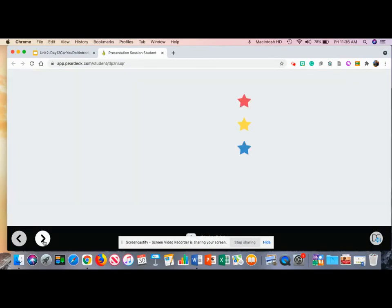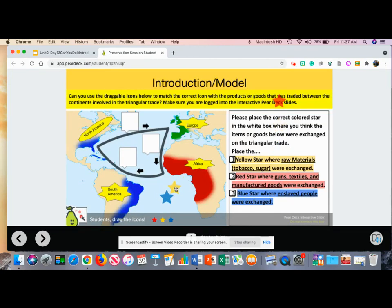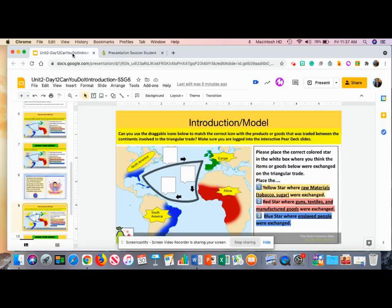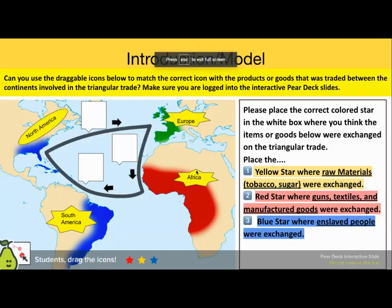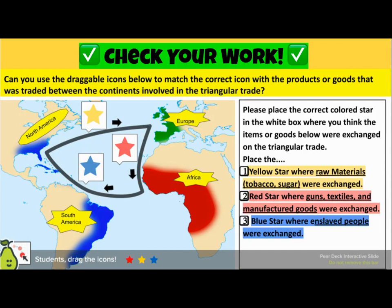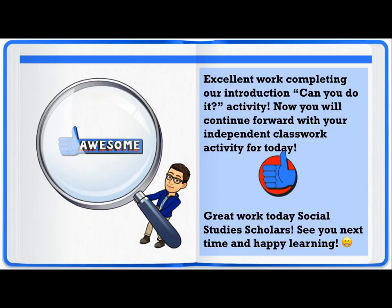Okay social studies scholars, let's check our work. The yellow star has been placed between North America and Europe where raw materials were exchanged. The red star was placed between Europe and Africa where guns, textiles, and manufactured goods were exchanged. And finally, the blue star was placed between Africa and South America and North America where enslaved people were exchanged. Excellent work completing our introduction 'can you do it' activity. Now you will continue forward with your independent classwork activity for today. Great work today, social studies scholars — see you next time and happy learning.